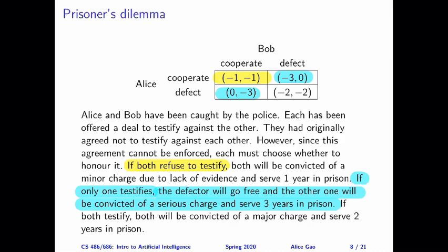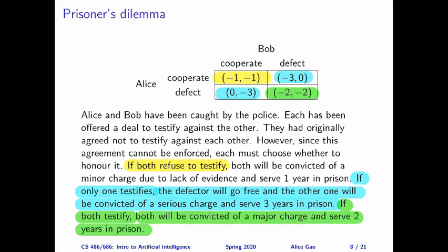Finally, if both Alice and Bob choose to testify against each other — so both of them defect — they will both be convicted of a major charge and serve two years in prison. This outcome is better than if you stay silent and the other person testifies against you, but it's still worse than if both of them stay quiet and don't say anything.